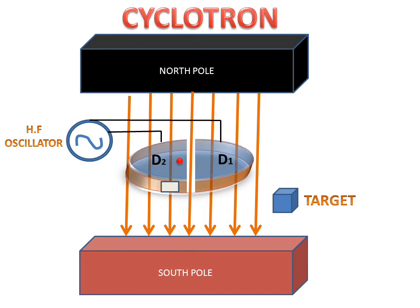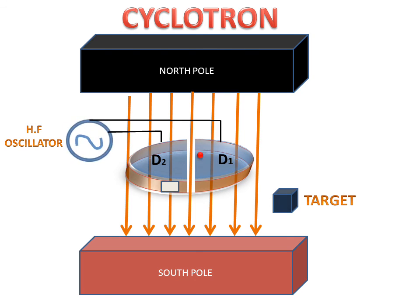The high frequency oscillator reverses the polarity at regular time intervals. Our particle keeps accelerating and strikes on the target. So this is the working of the cyclotron — the high frequency oscillator gives D1 and D2 alternating polarity, the particle accelerates, exits through the window, and strikes the target.